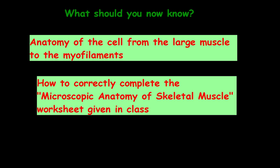You should now know the anatomy of the cell from the large muscle down to the myofilaments, including actin and myosin, and be able to correctly complete your microscopic anatomy of skeletal muscle worksheet. It has definitions, a diagram very similar to the ones shown, and two sides. If you have not completed it, be sure to do so. That concludes our second screencast.